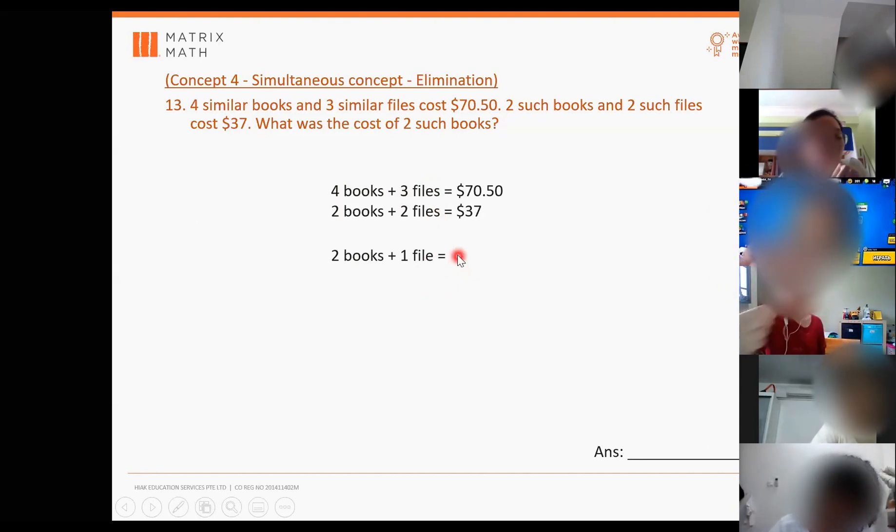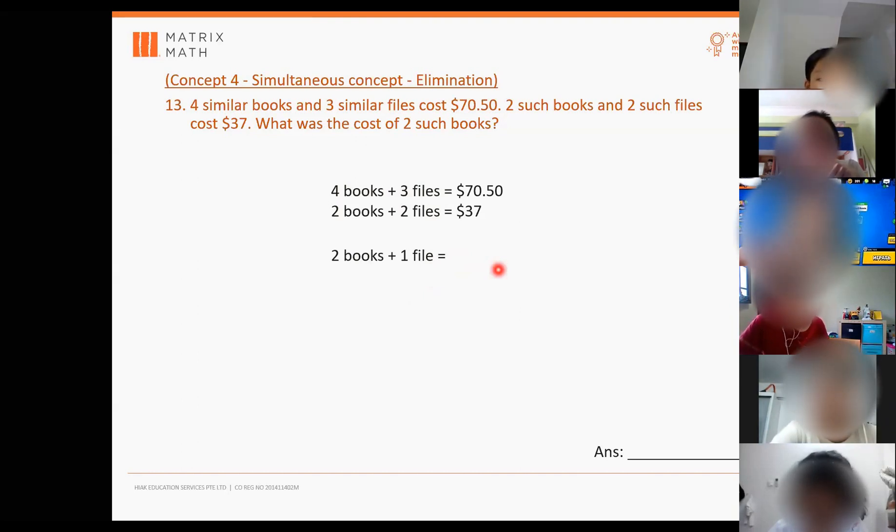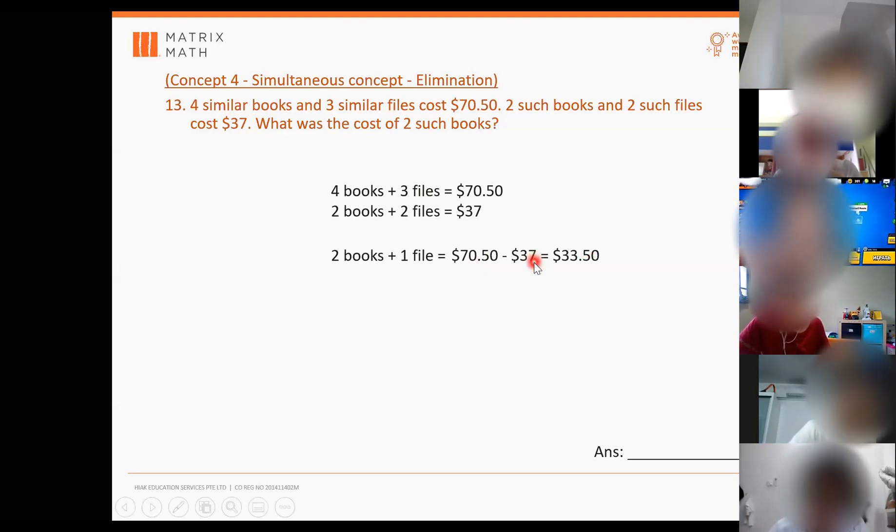So two books and one file, how should I find the cost? $33.50. How do you get the answer? $70.50 minus $37. Yes, okay, just take again, find the difference between these two values. $70.50 minus $37. Anyone not sure how to minus? Need me to show the working? Don't need how. Okay, money, I think you all should know how to minus, right?